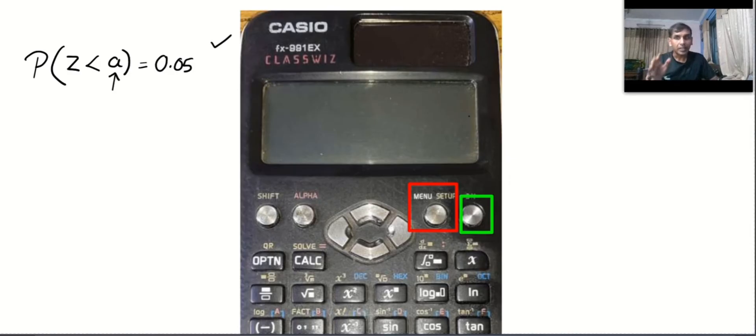Let me make it very clear. If you want to use your calculator to find the inverse normal value, then you should be aware that we need less than or less than or equal to. That means, if you ever see probability of Z greater than A, you have to forcefully convert it into 1 minus probability Z less than or equal to A. So, the inequality should be less than or less than or equal to.